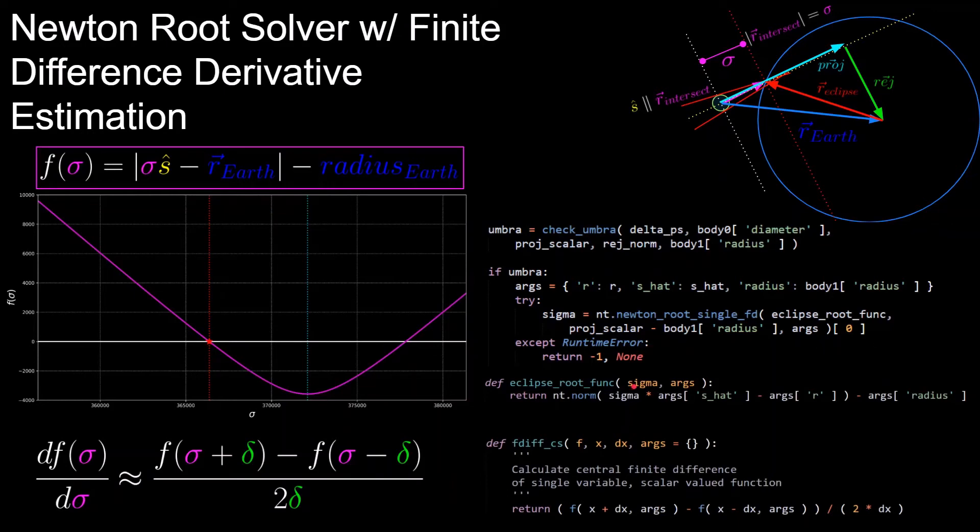For these types of root solvers, we need to be able to calculate the derivative of our function. In this case, we can use finite differences to approximate the derivative and it still works. And this comes from the classic definition of the slope of a line, which is equal to y2 minus y1 over x2 minus x1. In our case, we'll use central differences to approximate the derivative, where we nudge sigma by some small value delta in the positive direction, evaluate the function, and subtract by the function with sigma nudged in the negative direction by delta, and then divide by 2 delta.